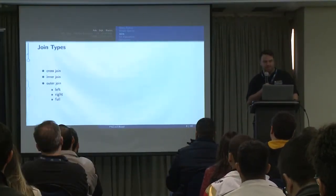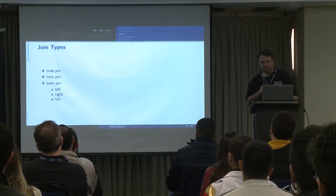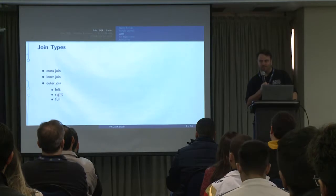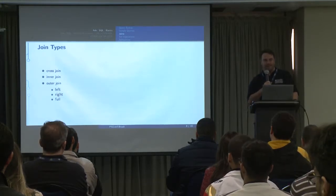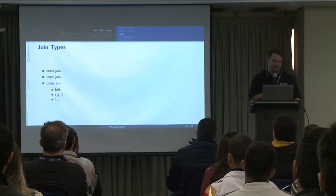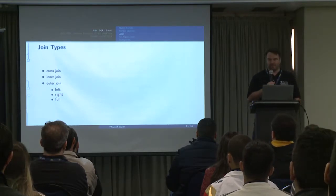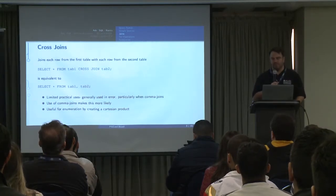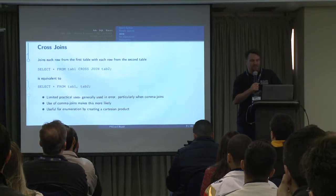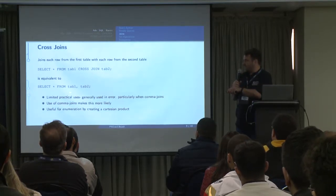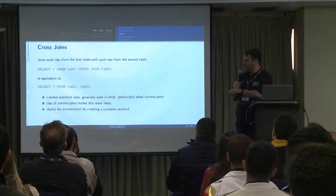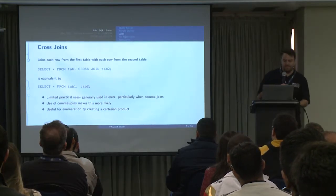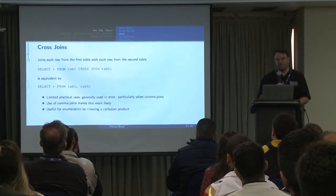Let's start talking about different join types. A lot of people are familiar with all the simple types of queries, but let's talk about cross joins. A cross join is pretty straightforward — it takes every row from the first table and combines it with every row from the second table. This kind of cross join is actually equivalent to what I'd call a comma join.